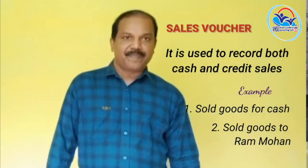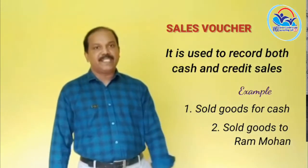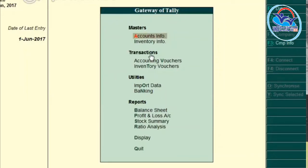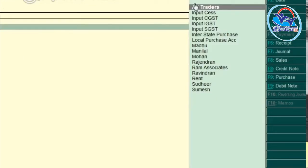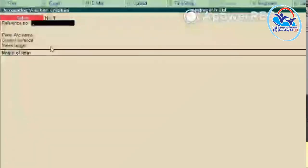The procedure for selecting Sales Voucher: Gateway of Tally, select Accounting Voucher, then select Sales Voucher or press F8. F8 is the function key for Sales Voucher.